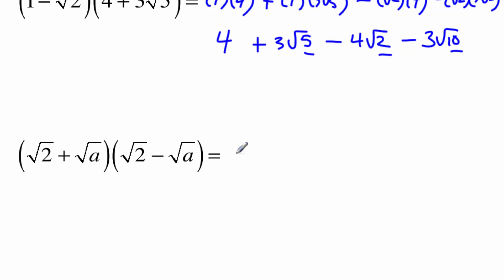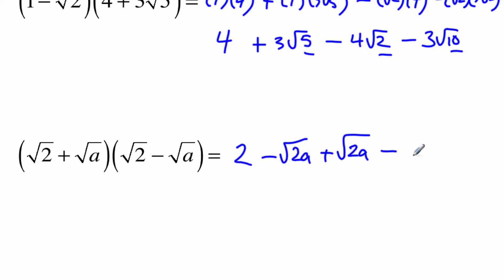Let's try this one. Root 2 times root 2 would be the square root of 4, which is 2. Root 2 times root a would be minus root 2a; root a times root 2 would be a positive root 2a — so those cancel. Root a times root a minus root a squared, and the square root of a squared is just a. So this one winds up being 2 take away a.